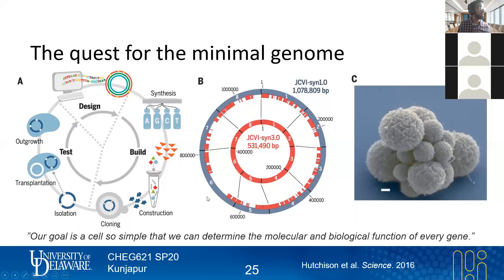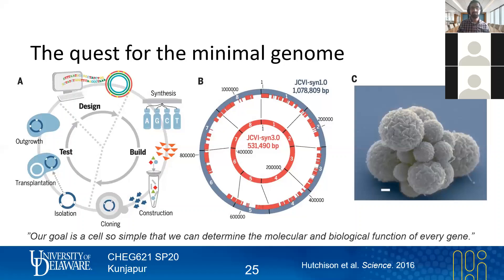From a metabolic engineering perspective, I like to think of the minimal genome as closer to that aspirational blank canvas — where in terms of metabolic pathway maps or redundancies you might face in a normal bacterial host, you now have much less of that, or at least you know what it is, giving you increased predictability over your design.